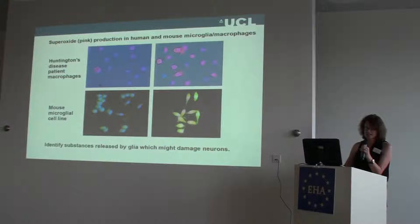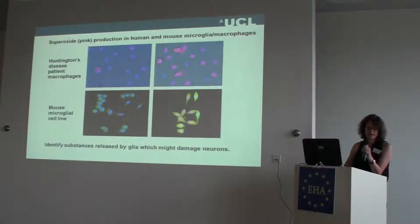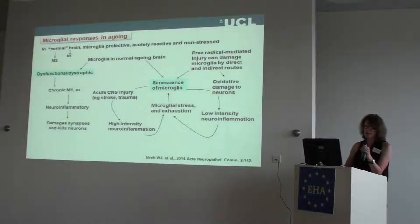They also produce superoxide. At the top we've got human microglia from patients activated with a stressor, LPS, and they start producing superoxide, as well as this mouse microglial cell line, BV2, below. So they do produce significant amounts of intracellular superoxide as well as extracellular.